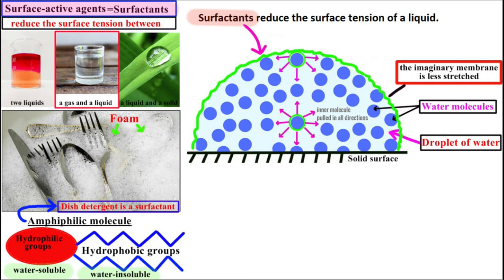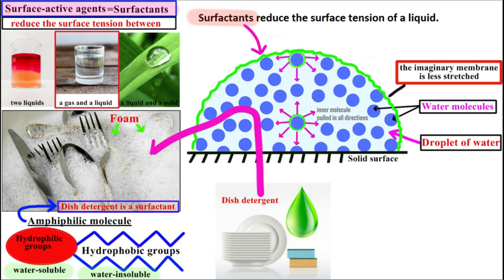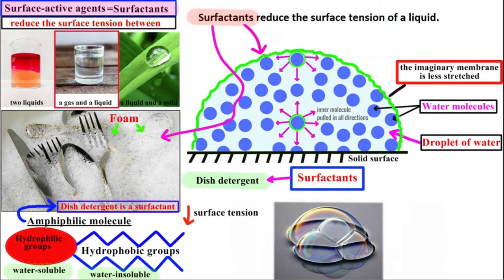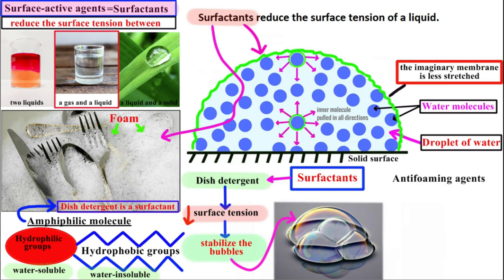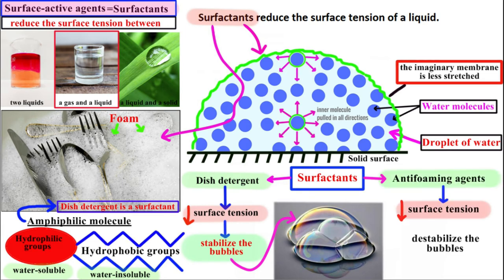When a dish detergent is added to water it lowers the surface tension and a lot of bubbles will form. The detergent is a foaming agent because it facilitates the production of foam. The detergent acts as a surfactant and reduces the surface tension of water, but it also causes air bubbles to become more stable. Anti-foaming agents, on the other hand, are groups of surfactants that not only reduce the surface tension of water, but also destabilize the air bubbles and the foam. The difference between classic surfactants and anti-foaming agents is very subtle.